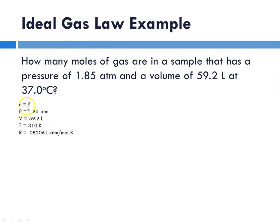Identifying the variables: n is what we're solving for. Our pressure is 1.85 atm. Our volume is 59.2 liters. Our temperature is 37.0 plus 273, which is 310 degrees Kelvin. And our R is 0.08206, and we're using liter atmospheres per mole Kelvin to match our pressure unit.